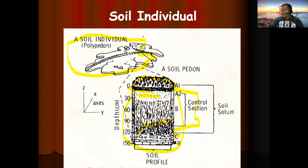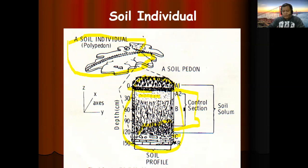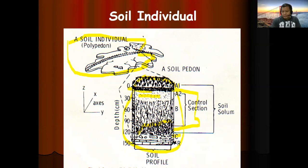So the pedon is the basic unit of soil survey, and the series is the basic unit of soil classification. When we classify and name soils, we look into the properties of the soils — physical, chemical, and biological properties — by examining the control section, which is also called the subsoil.